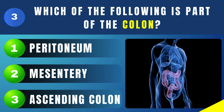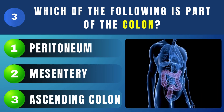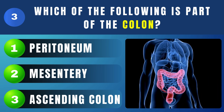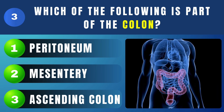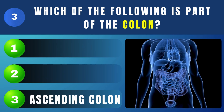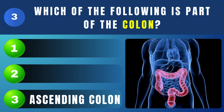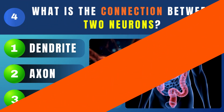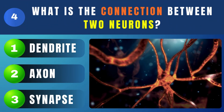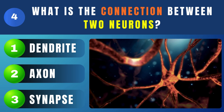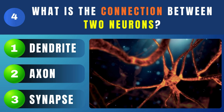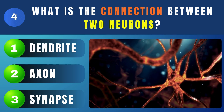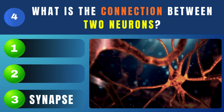Which of the following is part of the colon? Ascending colon. What is the connection between two neurons called? Synapse.